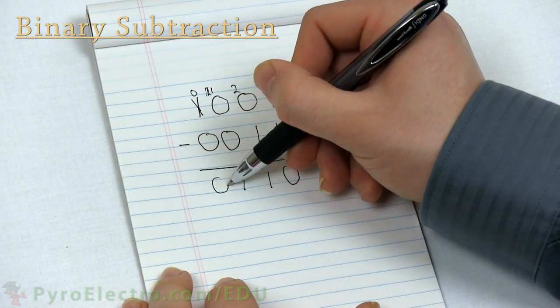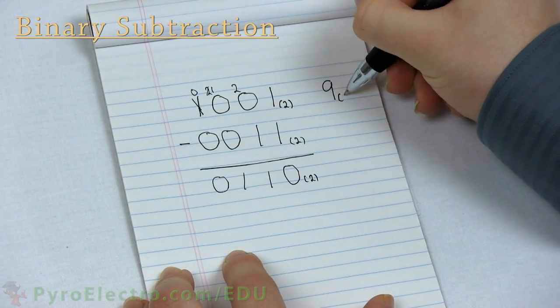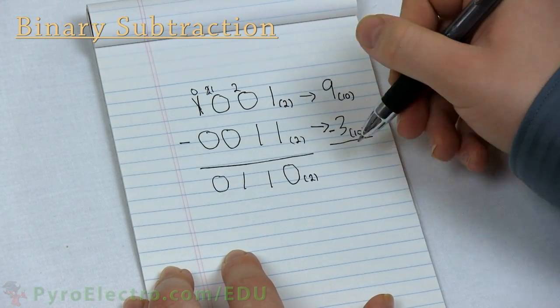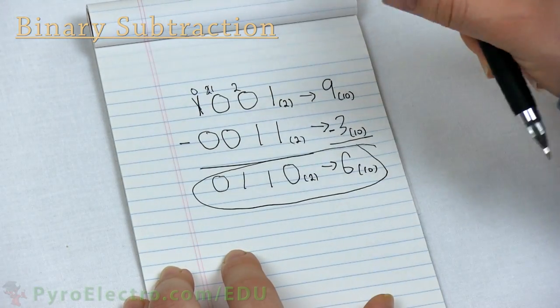So our answer is 0, 1, 1, 0. And if we convert these numbers over to decimal, we can see that 9 minus 3 equals 6. And again, you can convert the binary answer to decimal to double-check it's the correct answer.